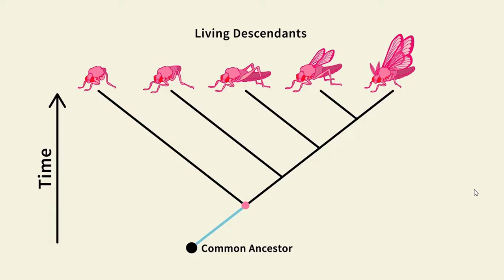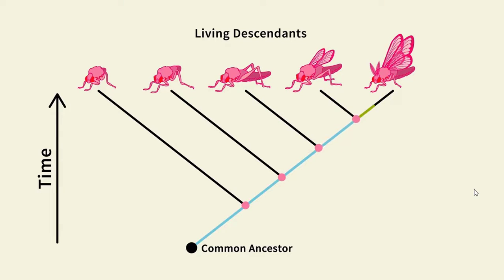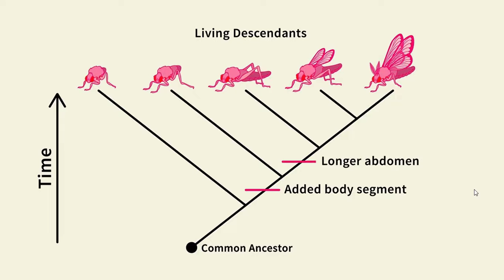Moving forward in time, we reach another branch point. The creatures that connect to the branch on the right have a longer abdomen. This pattern continues. The next trait to come along is wings, followed by antennae. Looking at the branching pattern, we can see the order in which various traits arose.